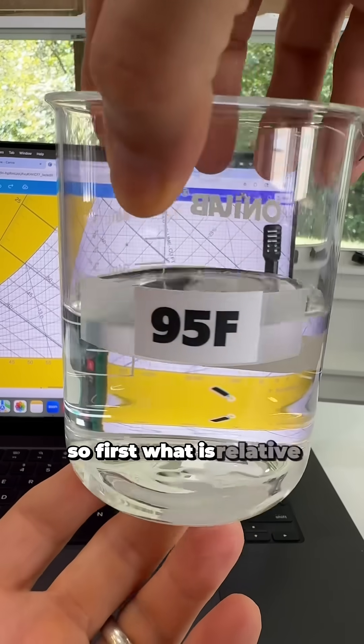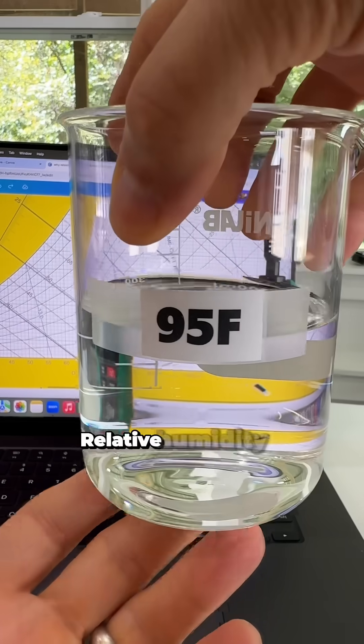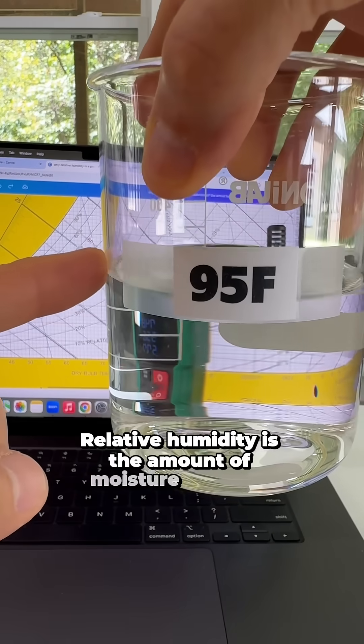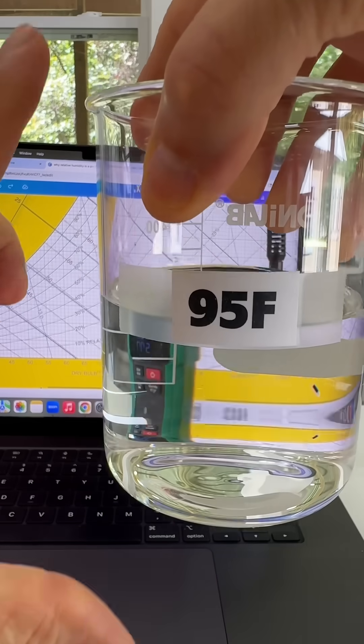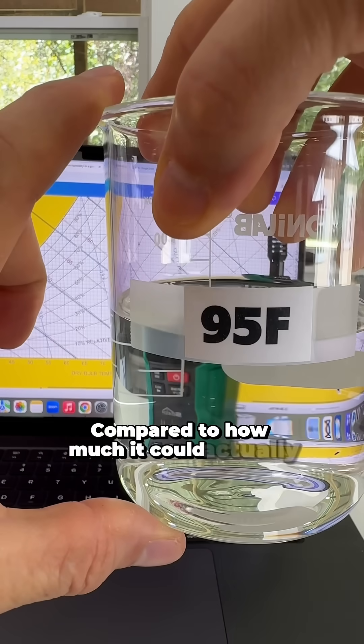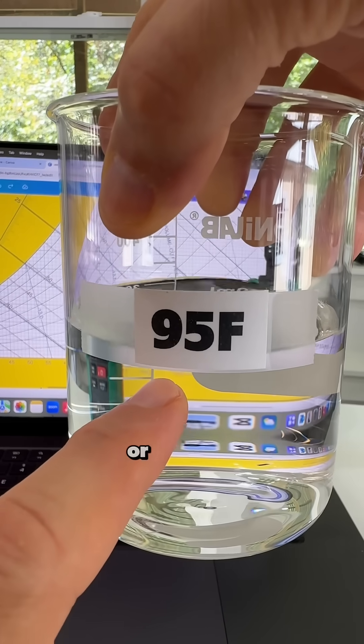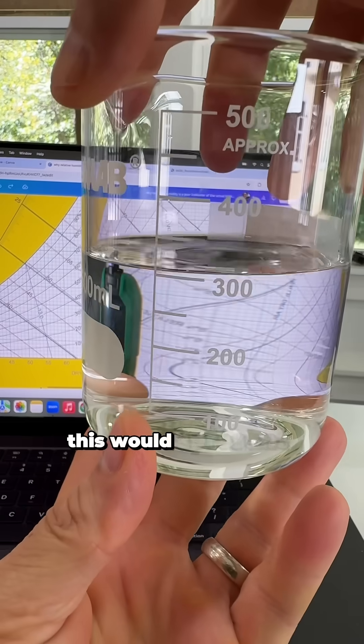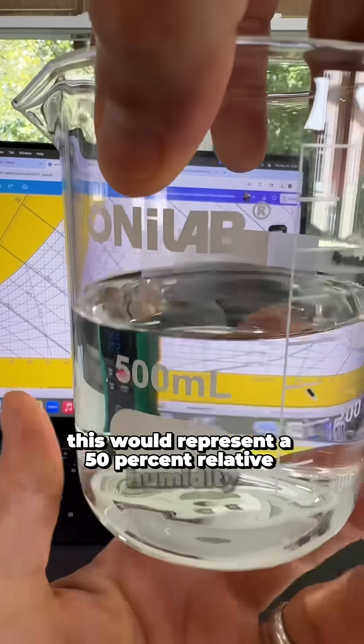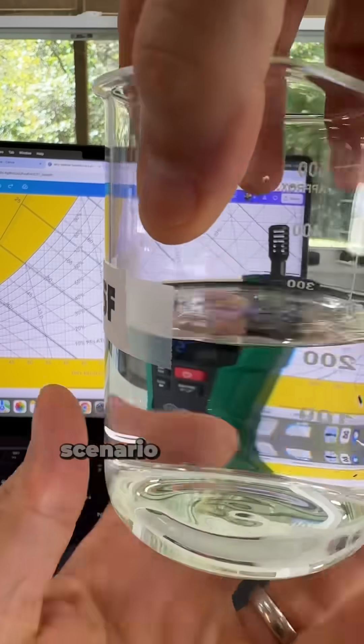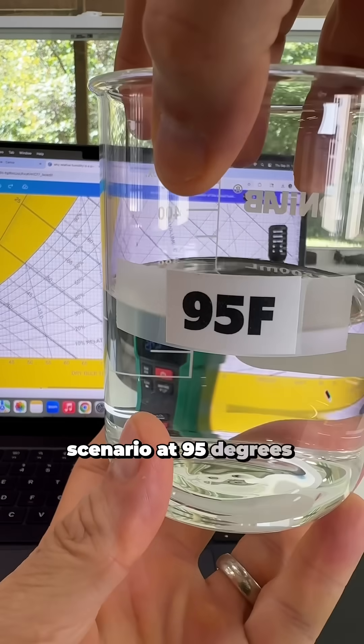Okay, so first, what is relative humidity? Relative humidity is the amount of moisture in the air compared to how much it could actually hold at a specific condition or specific temperature. So this would represent a 50% relative humidity scenario at 95 degrees ambient.